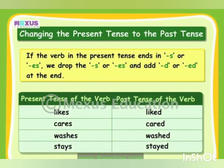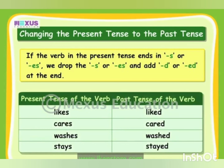For example, 'likes' becomes 'liked', and 'cares' becomes 'cared'. Or, if the verb in the present tense ends in 'ies', we drop the final 's' and add 'd' at the end. For example, 'fries' — we drop the 's' and add 'd' to get 'fried'. Similarly, 'dries' becomes 'dried', and 'tries' becomes 'tried'.